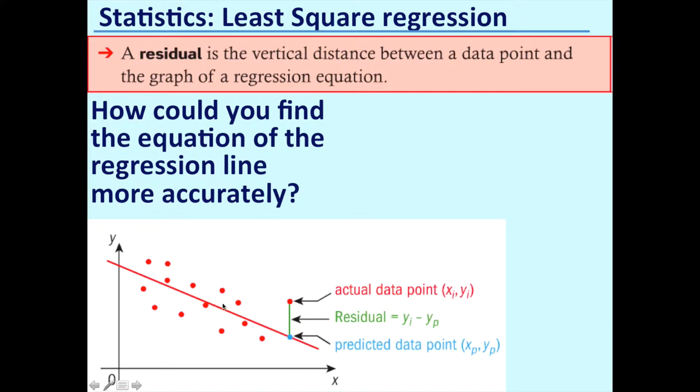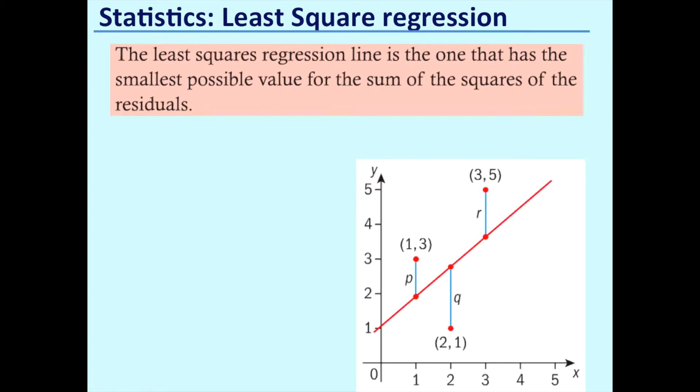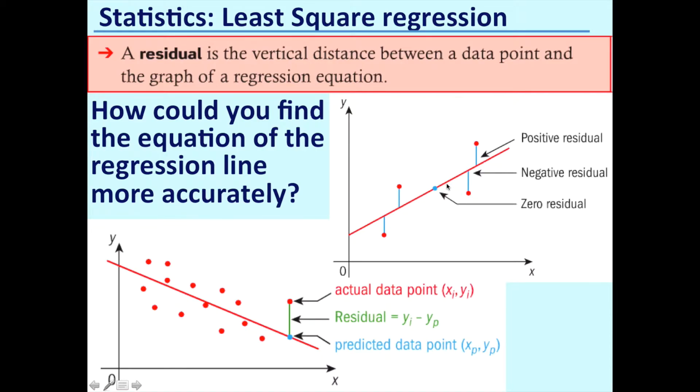So the first thing we're going to look at is this concept of a residual. A residual is defined as the vertical distance between a data point and the graph of a regression equation. So suppose here this was the line of best fit that you drew just by looking through the points. For each point there will be some point on the line. If x here was 10, according to the equation if you plugged in x equals 10 you would end up with some value of y. However, the actual value here might have a discrepancy between the predicted value according to the formula and the actual value. This distance between the two is termed the residual. So we have positive residuals, negative residuals, and zero residuals.